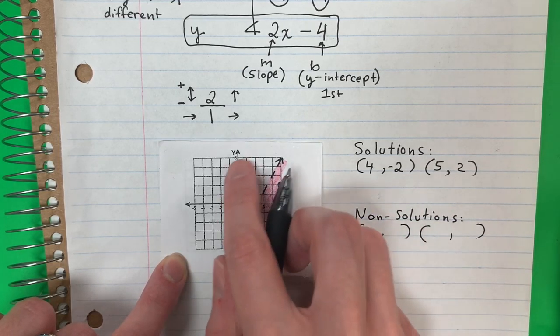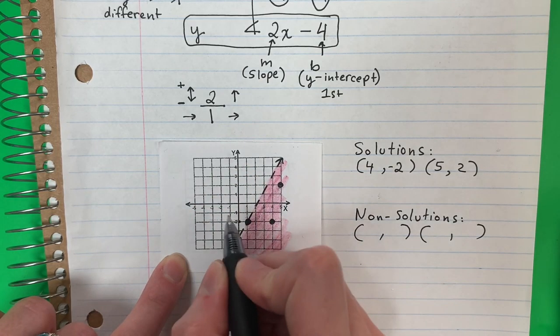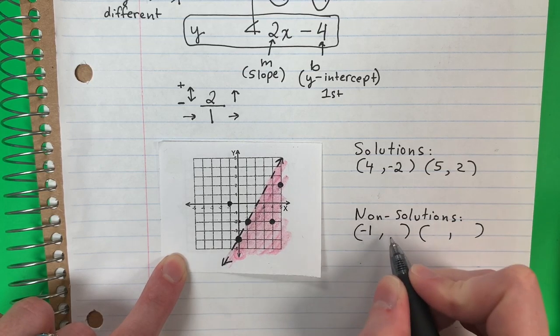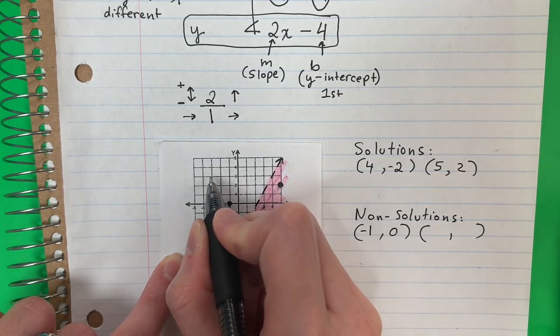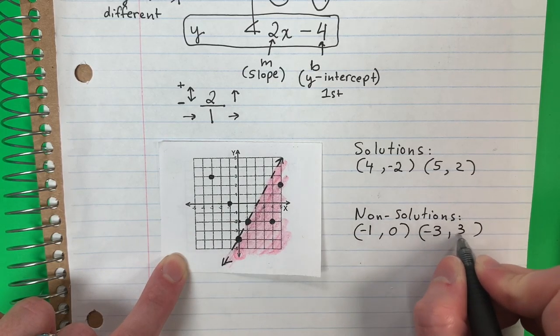Non-solutions are no color. Non-solutions no tiene color. So for example, here, this one, negative 1, 0. Or for example here, negative 3, 3.